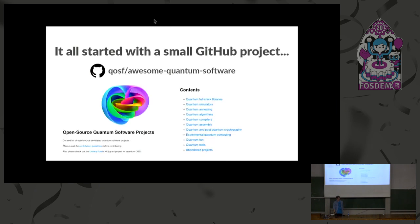What's the story behind the Quantum Open Source Foundation? It basically all started with a small GitHub project that I was hosting on my own GitHub, and by now it's on the QOSF GitHub. It's basically a list of all open source quantum projects. We broke it down into different categories like full stack libraries, simulators, compilers, and a category for quantum fun where we have quantum games and other things, each broken down into programming languages. So if someone wants to get into the space and start or join a project on, say, a quantum simulator and they're comfortable in Common Lisp, they can go to the quantum simulators category, look for the Common Lisp subheader, and find all projects implemented in that language.